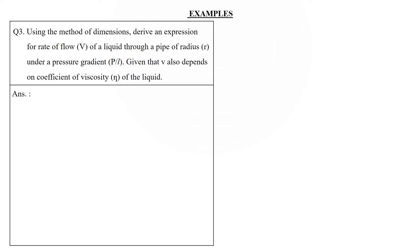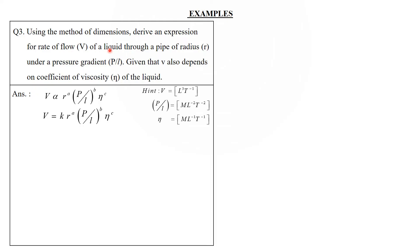Third example: rate of flow V of a liquid depends on radius r, pressure gradient (p/l), and coefficient of viscosity η. Rate of flow means volume per unit time, so its dimensions are [L³T⁻¹]. Pressure gradient p/l has dimensions [ML⁻²T⁻²] and coefficient of viscosity η has dimensions [ML⁻¹T⁻¹].